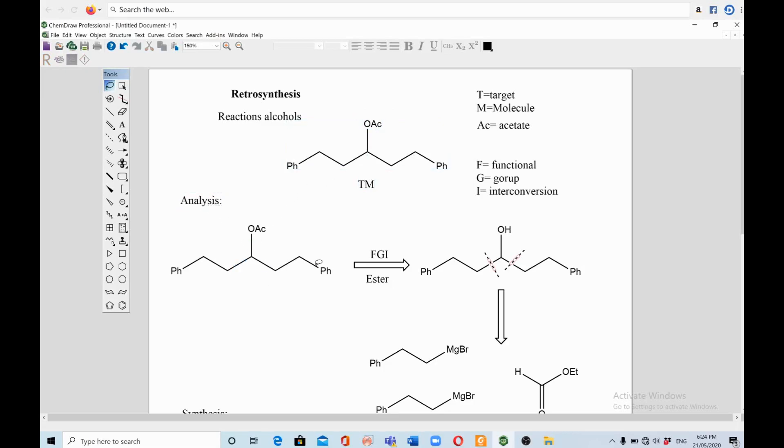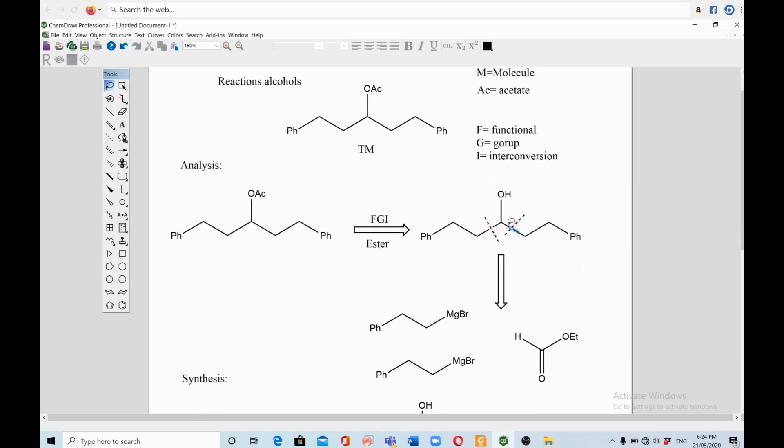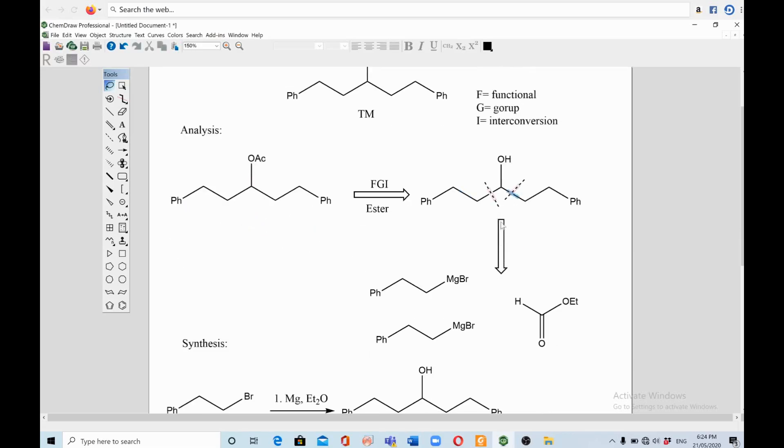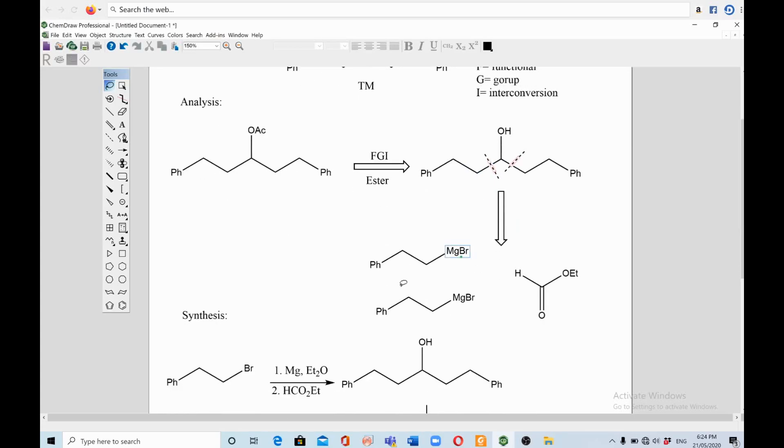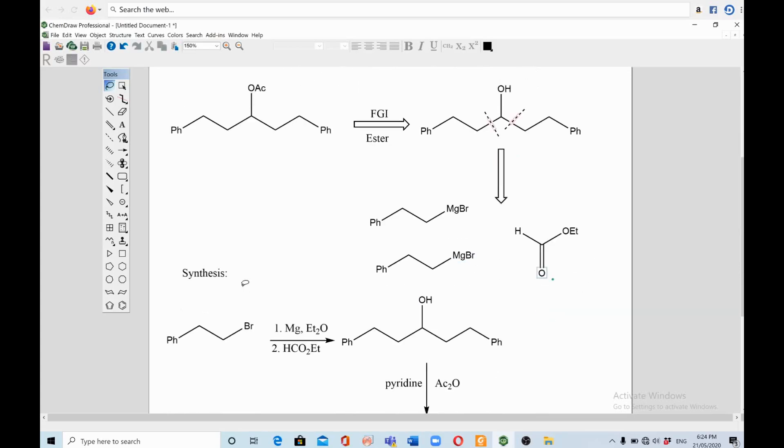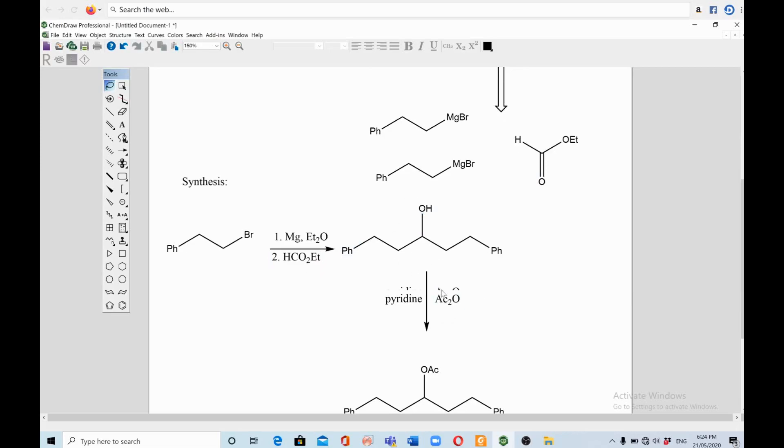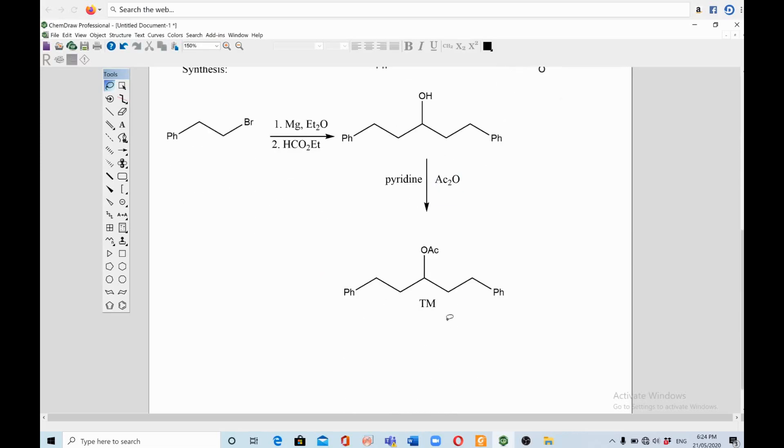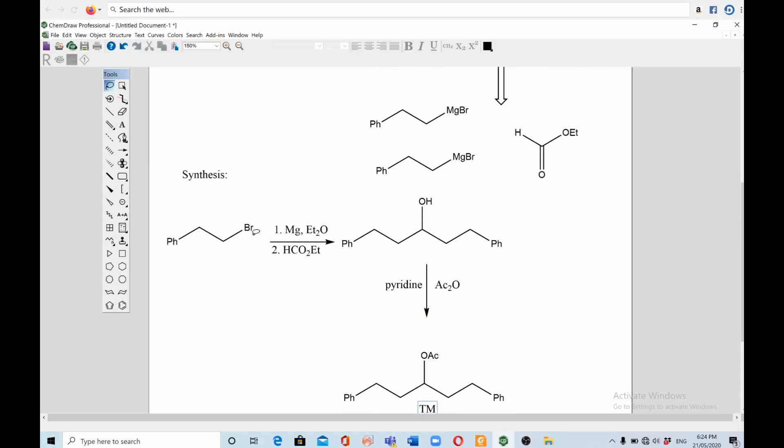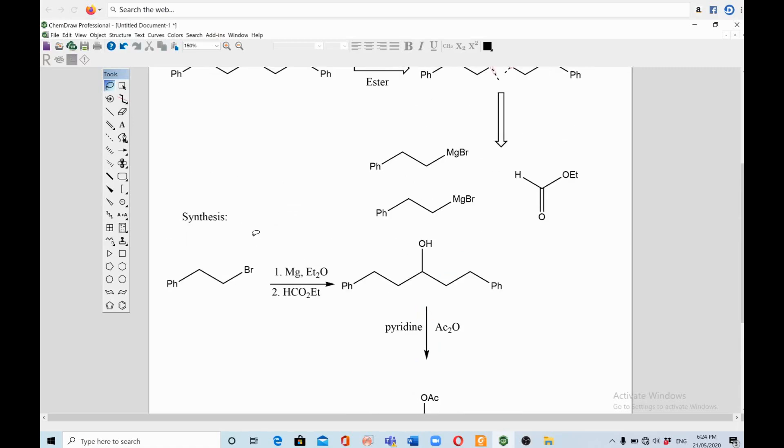So the retrosynthetic analysis: FGI of the ester makes an alcohol. This alcohol is symmetrical, we cut from two sides of the OH group, it becomes Grignard reagents and an ester. The synthesis involves preparation of Grignard, reaction of Grignard reagents with the ester group, reaching the alcohol, and protecting the alcohol with the acetate group. This is the TM. Hope you like this video. Please don't forget to put your comments below. Please like, share, and subscribe. Thanks!